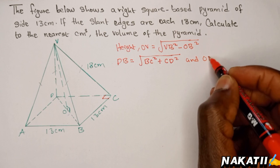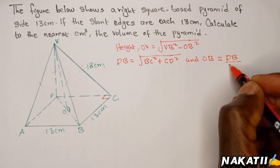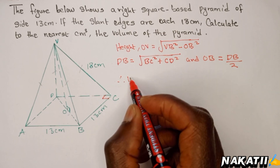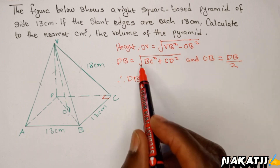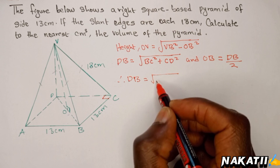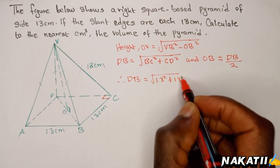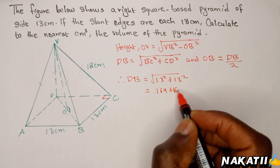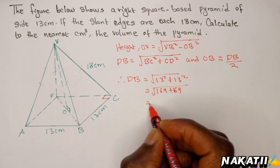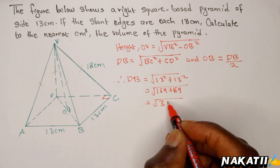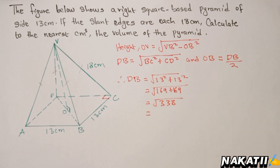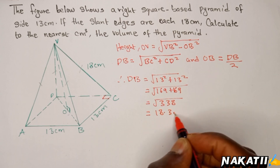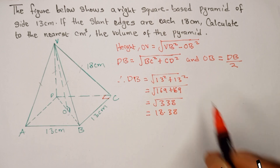Once we get DB, OB will simply be DB divided by two. Let's start by finding DB. DB equals the square root of 13 squared plus 13 squared. 13 squared is 169, plus 169. Taking the square root, we get the square root of 338.